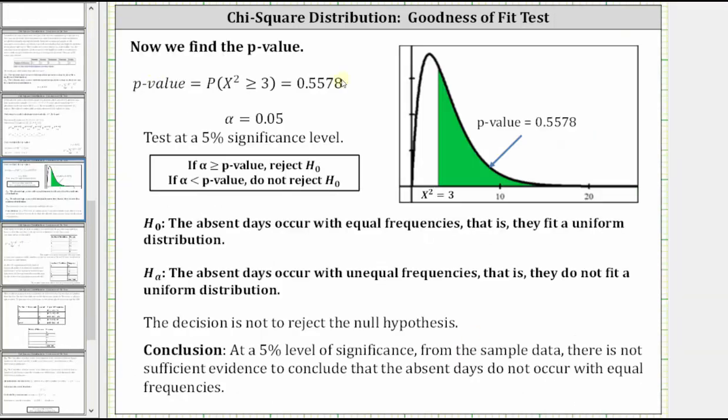Before we compare the p-value to alpha, let's take a look at the graph here on the right. Here we have the chi-square distribution, where the degrees of freedom are equal to 4. Our test statistic is chi-square equals 3, which is shown here,